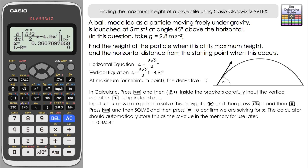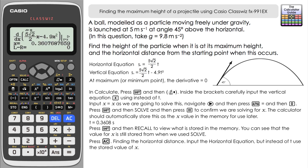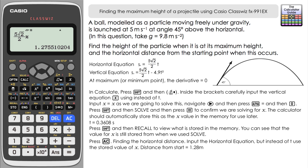That value is automatically stored as x in the calculator's memory. Pressing Shift and Recall confirms the stored x value is our time. Now using this stored time, let's calculate the horizontal distance. Press AC, input the horizontal equation: 5√2/2 times x, then press equals. We get the exact answer 125/98. Pressing SD converts this to a decimal: the horizontal distance is 1.28 metres to two decimal places.